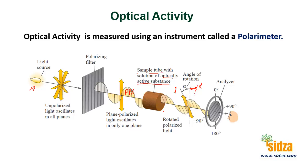A compound which is optically active can either rotate this light in the right direction or in the left direction. If the plane polarized light shows no rotation, the angle of rotation is zero, and we say the compound is optically inactive. For a compound to be optically active, the requirement is that the molecule must be chiral — only chiral molecules are optically active, while achiral molecules are optically inactive.